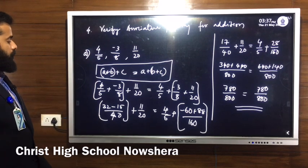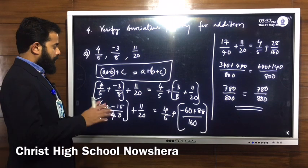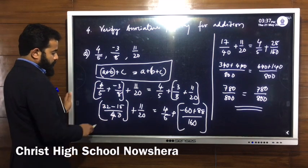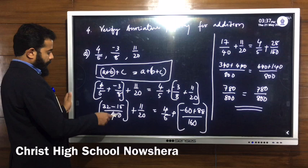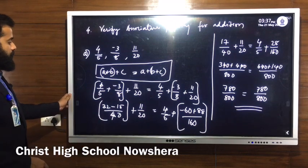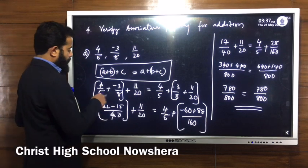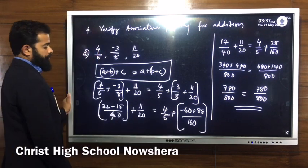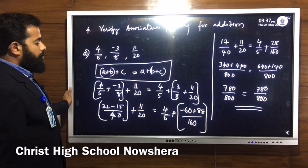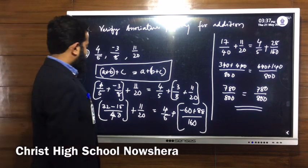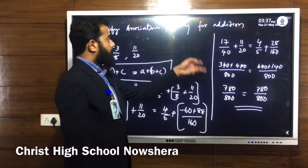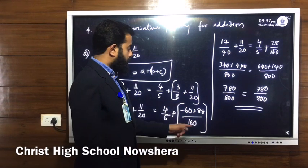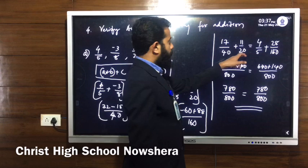Now we compare. First, do the calculation inside the bracket. Cross multiply: 8 into 4 = 32 and 5 into minus 3 = minus 15, giving 32 minus 15 divided by 40, with 11 by 20 outside. Right side inside the bracket: minus 60 plus 88 divided by 160. Then 32 minus 15 = 17 by 40, and right side minus 60 plus 88 = 28 divided by 160.